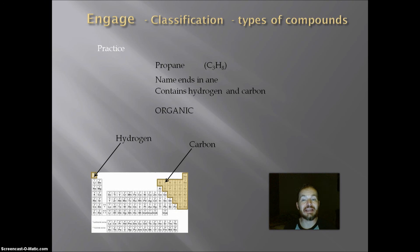So that is how you can identify the four types of compounds. Each one has a different naming system, and we're going to learn about those later. This ends the module on classification types of compounds.